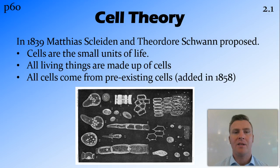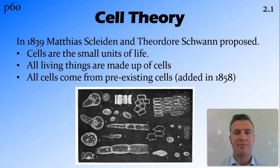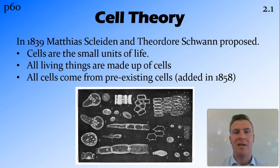Not long after this, Matthias Schleiden and Theodor Schwann came up with the proposal of cell theory. The original proposal was that cells are small units of life and that all living things are made up of cells. In 1858 another scientist came along and added that all cells are made from pre-existing cells, and this is the part that goes to disprove spontaneous generation.